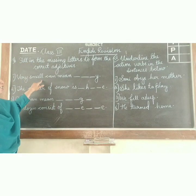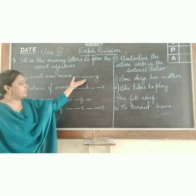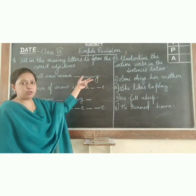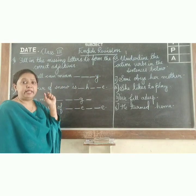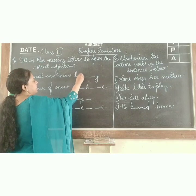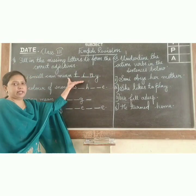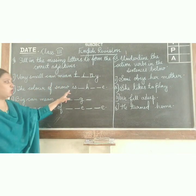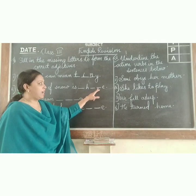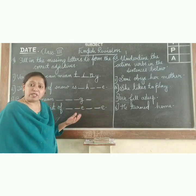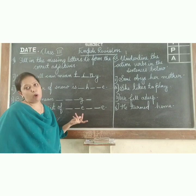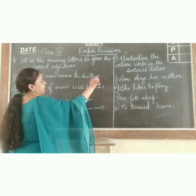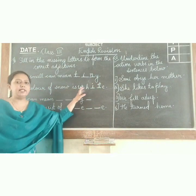Very small can mean — they have given a blank with one letter shown. Very small can mean tiny, T-I-N-Y. The color of snow is dash — H-dash-dash-E. The color of snow is white, W-H-I-T-E.